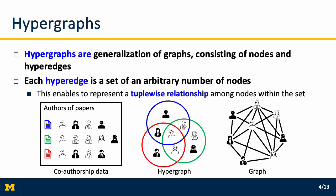Hypergraphs are a generalization of graphs, consisting of nodes and hyperedges. Each hyperedge is a set of arbitrary nodes. Thanks to hyperedges, the hypergraph can represent tuple-wise relationships precisely.